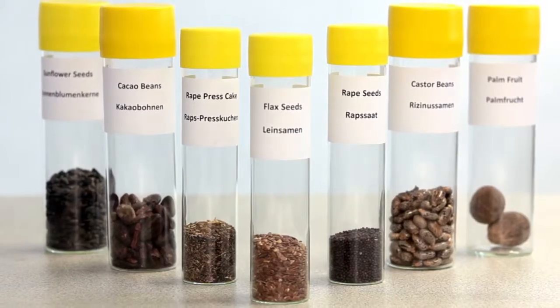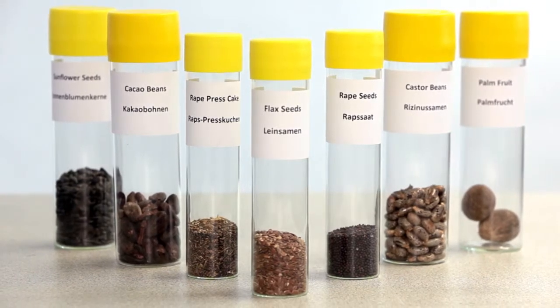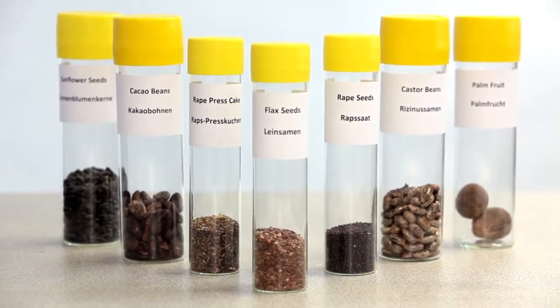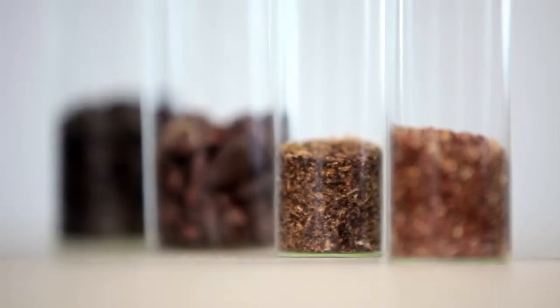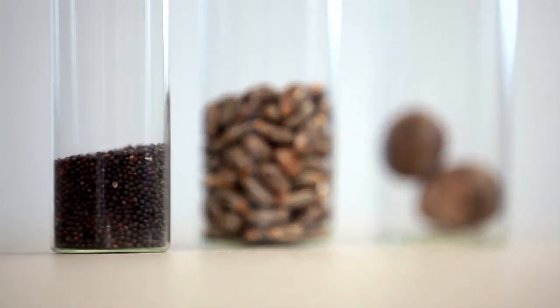In a broad variety of seeds, oil and moisture can be determined. Oil seeds like sunflower, rapeseed, or flax seed can be analyzed. In addition, various seeds, nuts, almonds, soy and cocoa beans, olives, or palm kernels, as well as press cake residues can be analyzed.